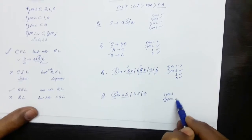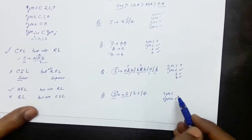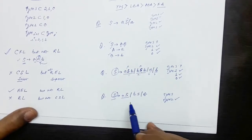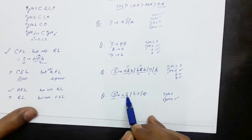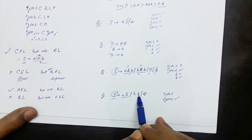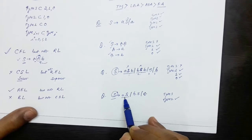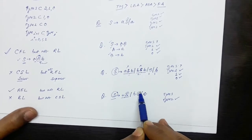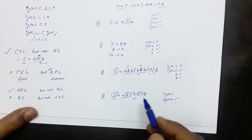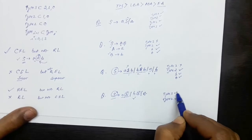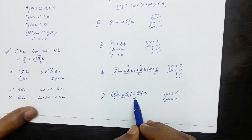Let us find out if it is Type 3. There is only one non-terminal on the right hand side, and both productions have the non-terminal symbol on the right hand side only. That is why this is Type 3 as well — it is right linear.